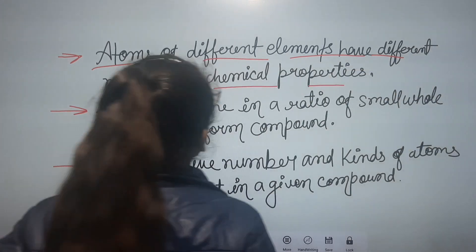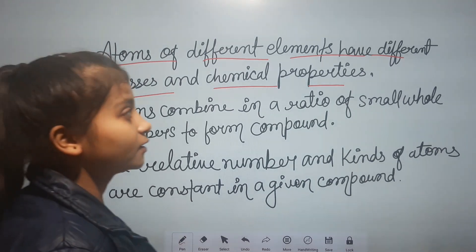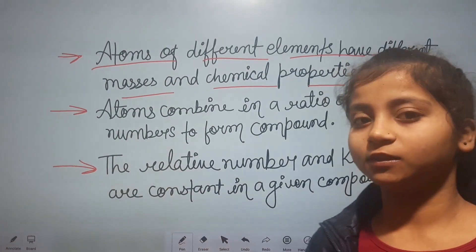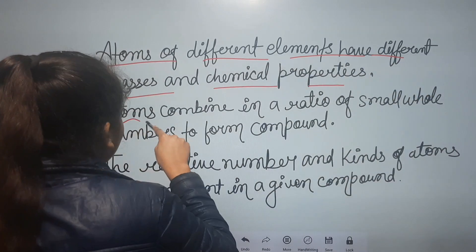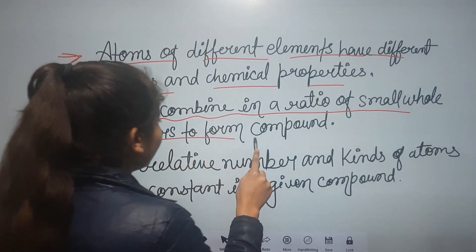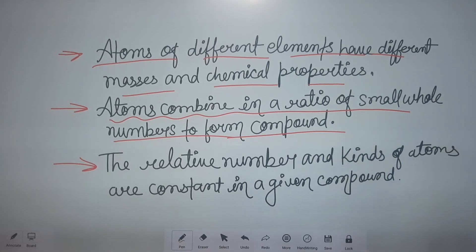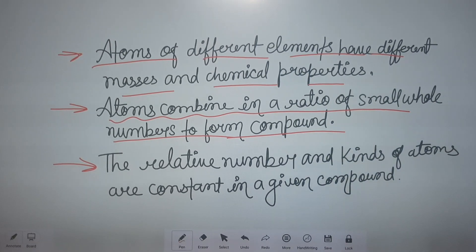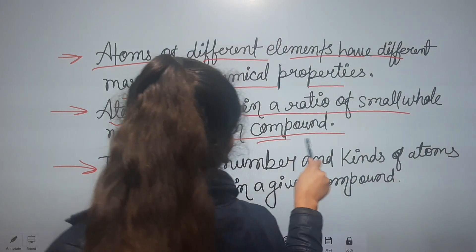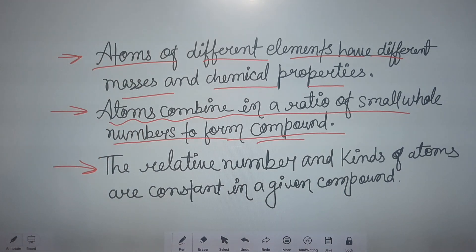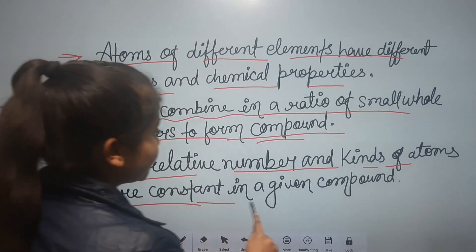This is simple — if the element is different, they have different mass and different chemical properties. All elements have different masses and different chemical properties. Atoms combine in a ratio of small whole numbers to form a compound.